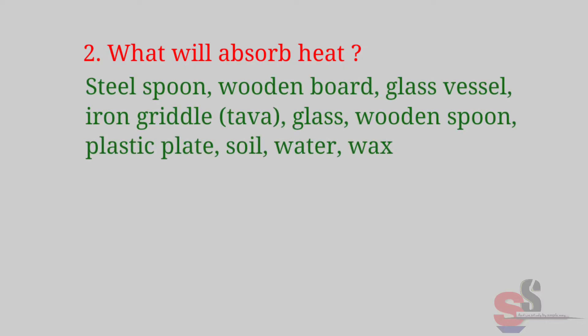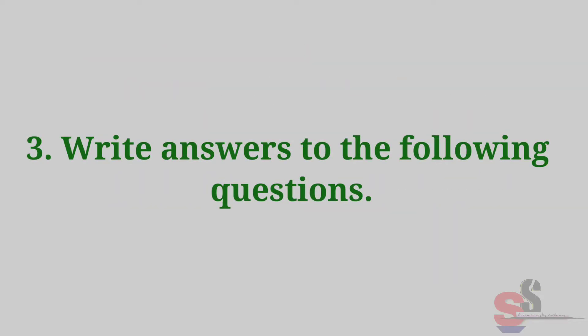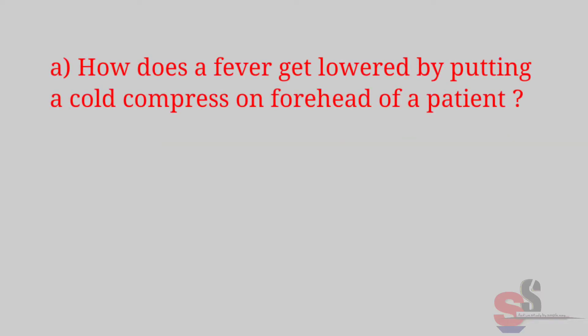Question 2: Which objects will absorb heat — steel spoon, wooden board, glass vessel, iron griddle (tawa), glass, wooden spoon, plastic plate, soil, water, wax? Answer: Metal objects such as steel spoon and iron griddle are good conductors of heat and they will absorb heat and will become hot.